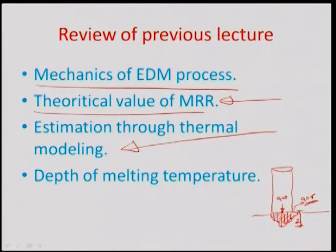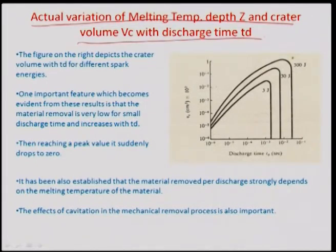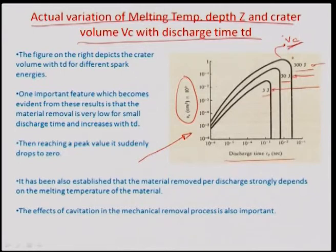Today we will look further into how the melting temperature depth varies with crater volume and discharge time. This graph illustrates how the volume of the crater VC varies with discharge time. It is very obvious that as the total spark power is increased to about 100 volts, there is a gradual increase in crater volume VC. Crater volume is greater when more energy is pumped in — that is intuitively understandable.